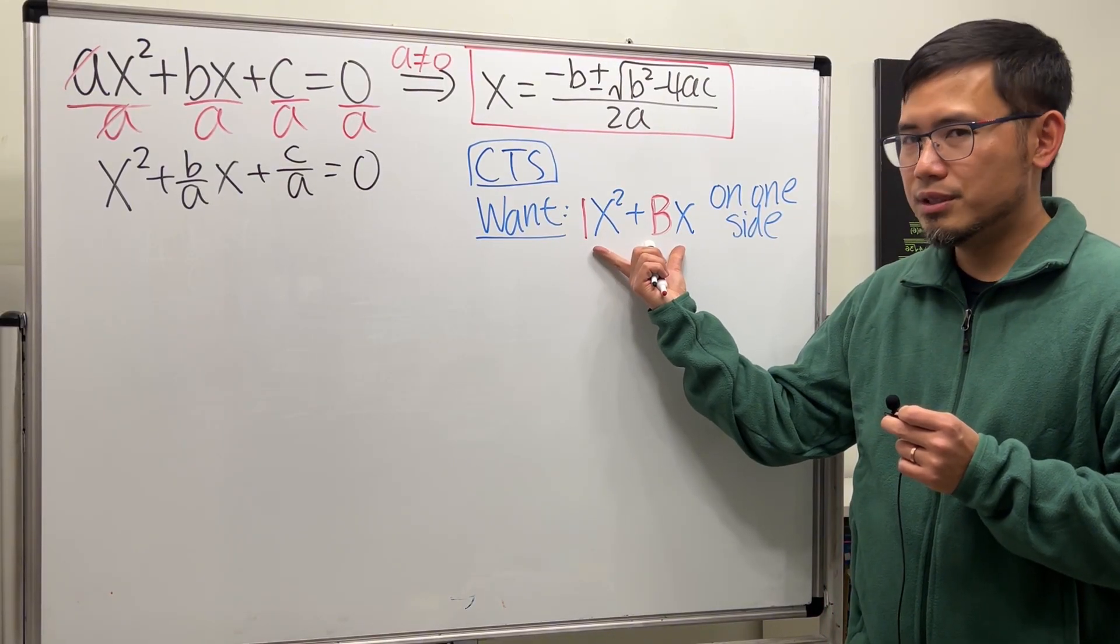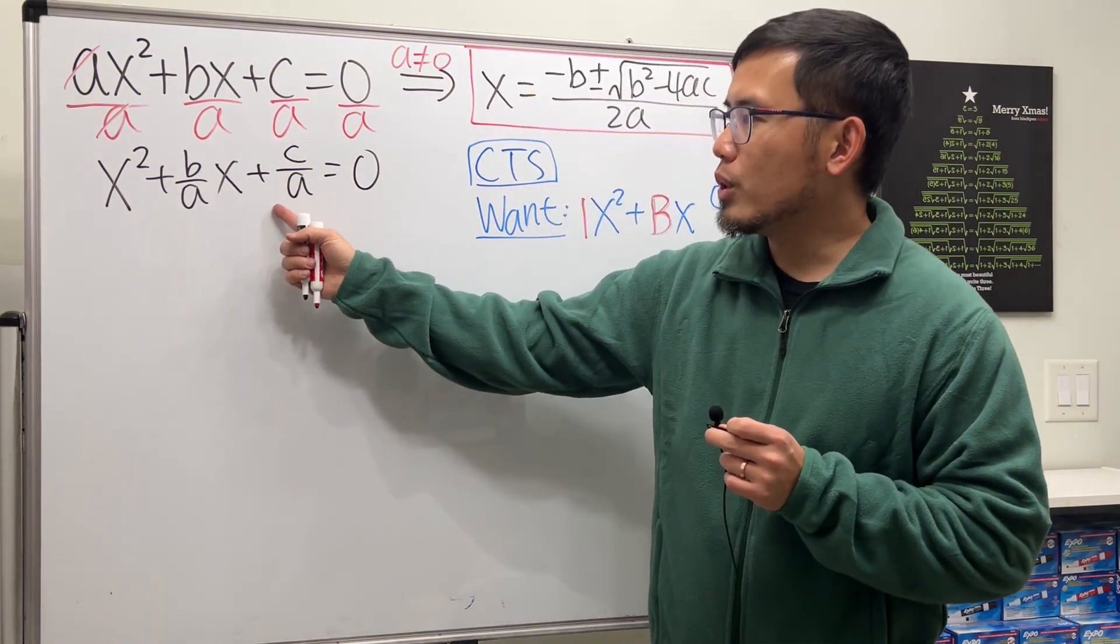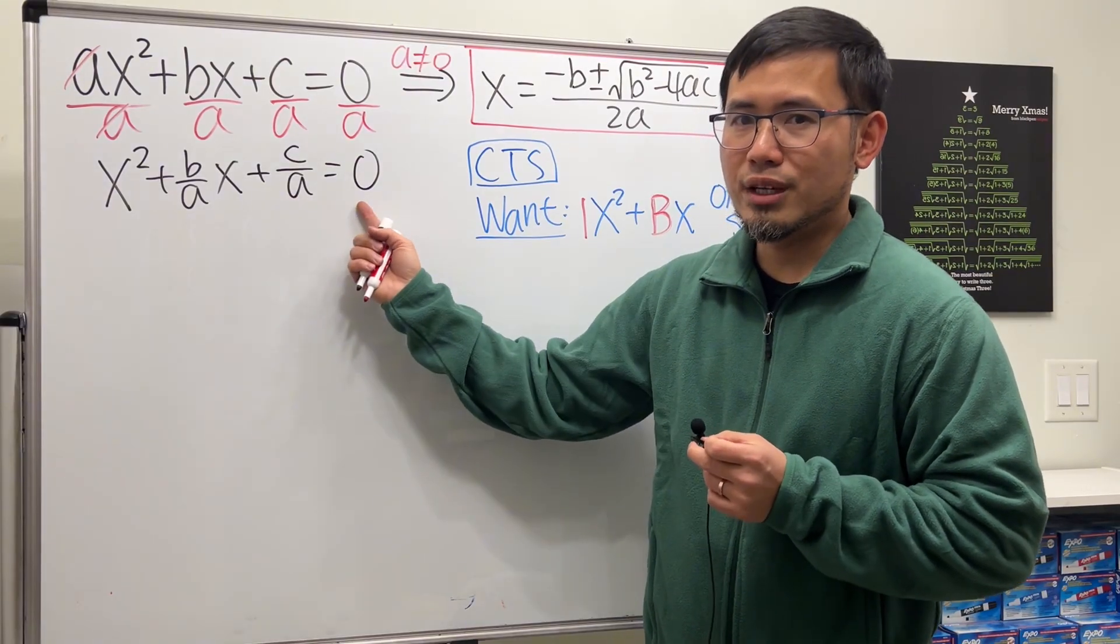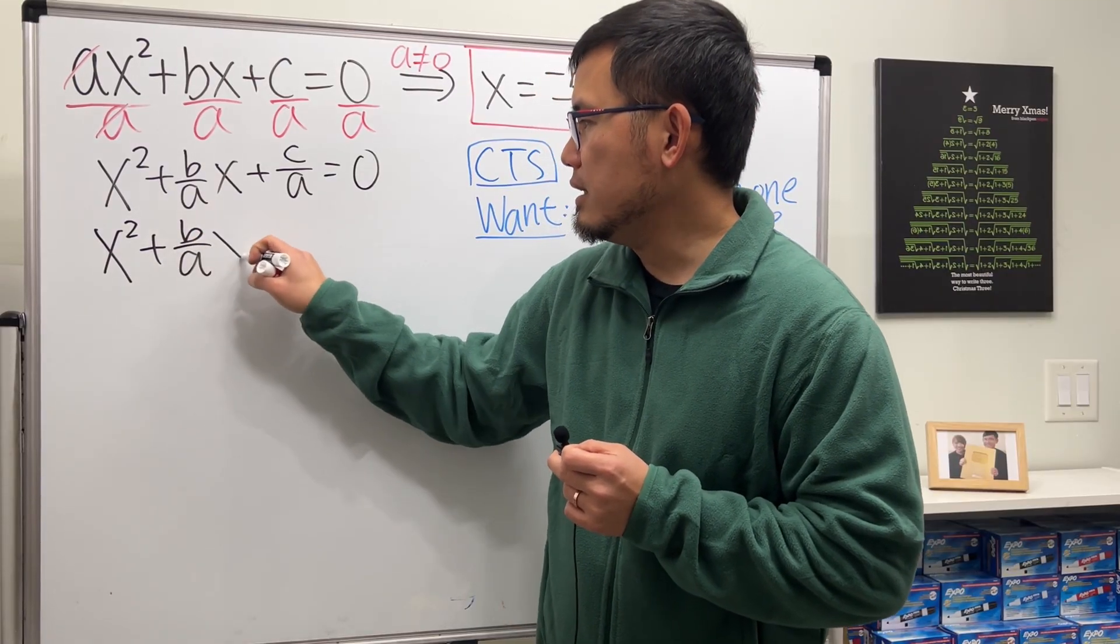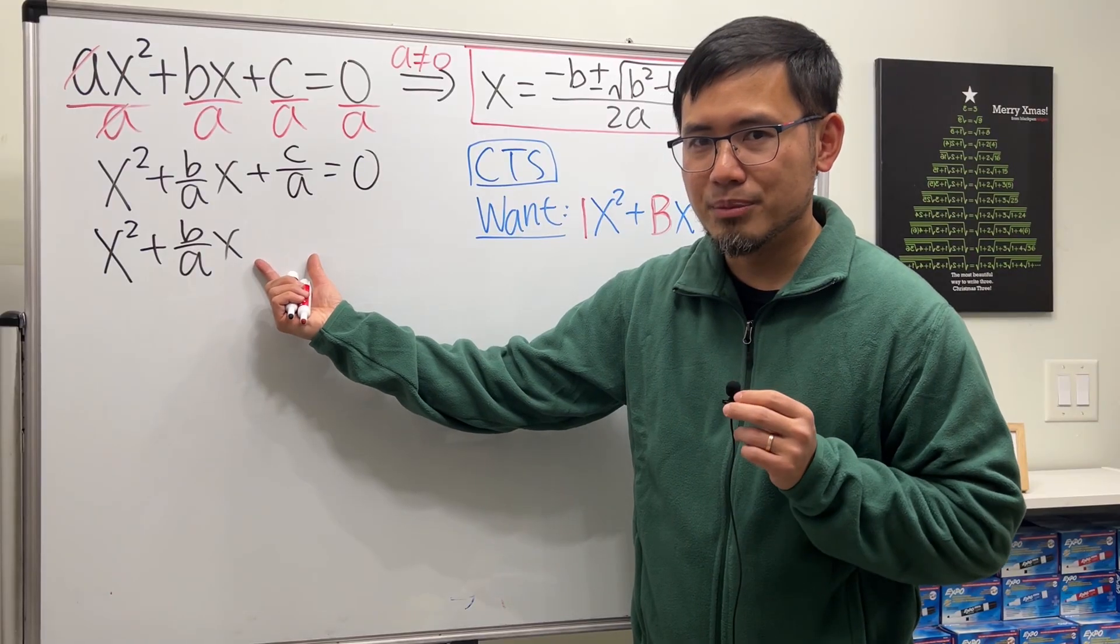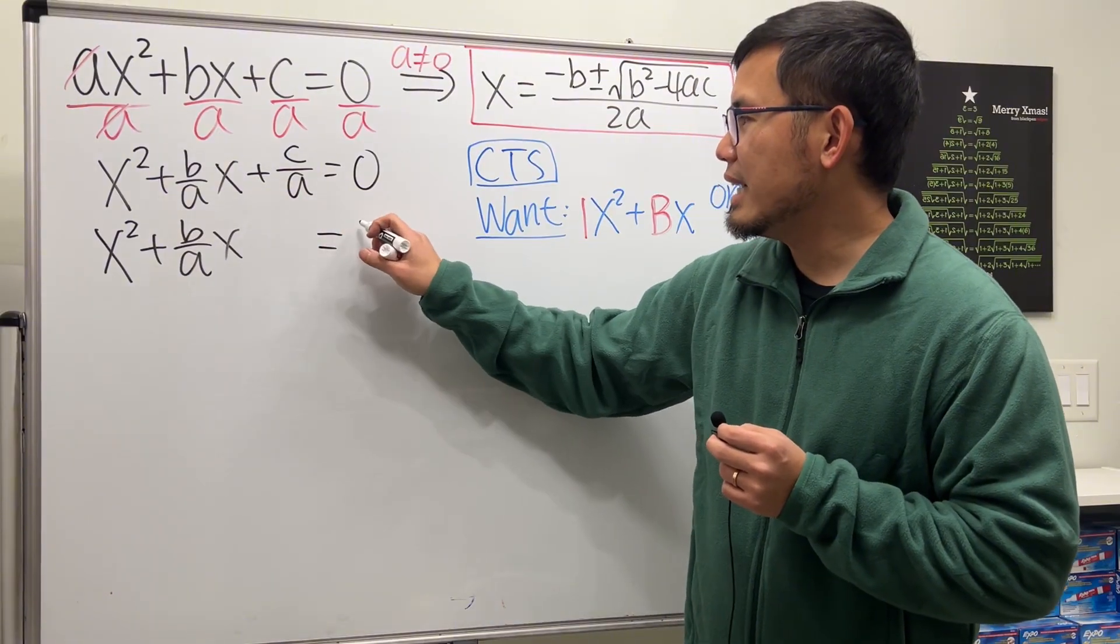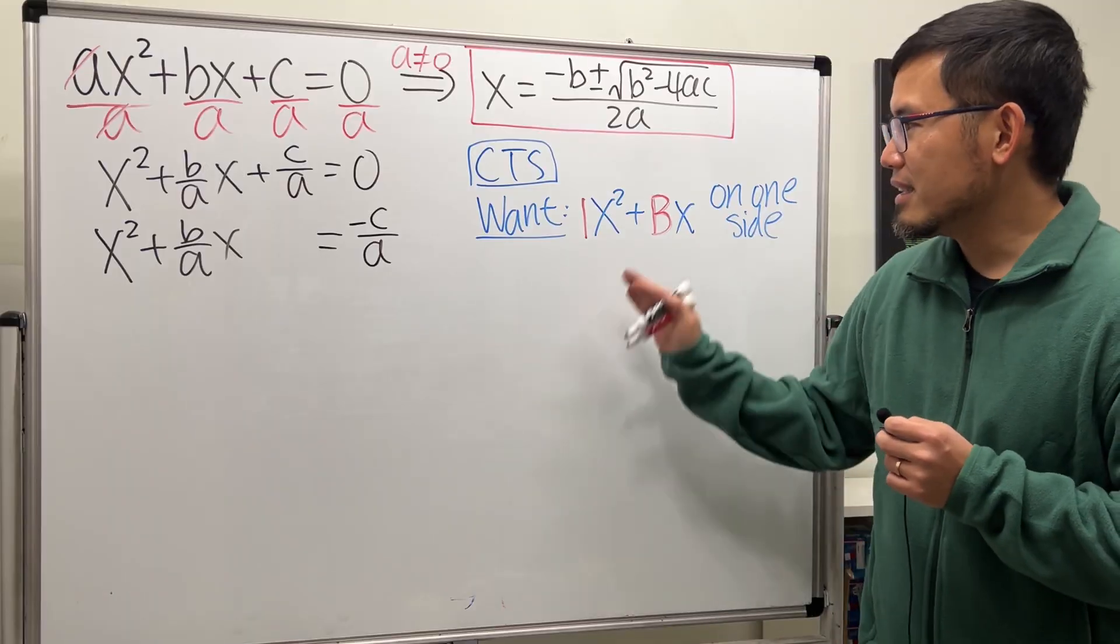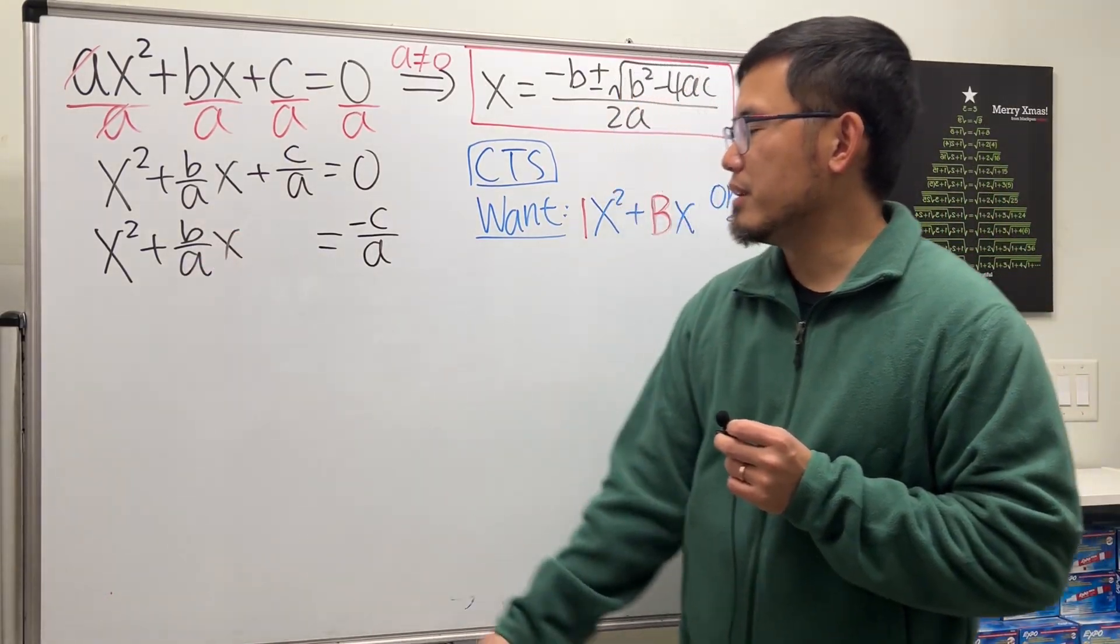Next, we want to have just these two terms on one side, which they are right here. I don't want to have the c/a here. So what can we do? Just bring that to the other side. So we have x² + (b/a)x. And let me tell you a secret: leave a space here for a magic number. You'll see. Put this to the other side. We get -c/a like that. Step one achieved. The red B is the b/a right here.